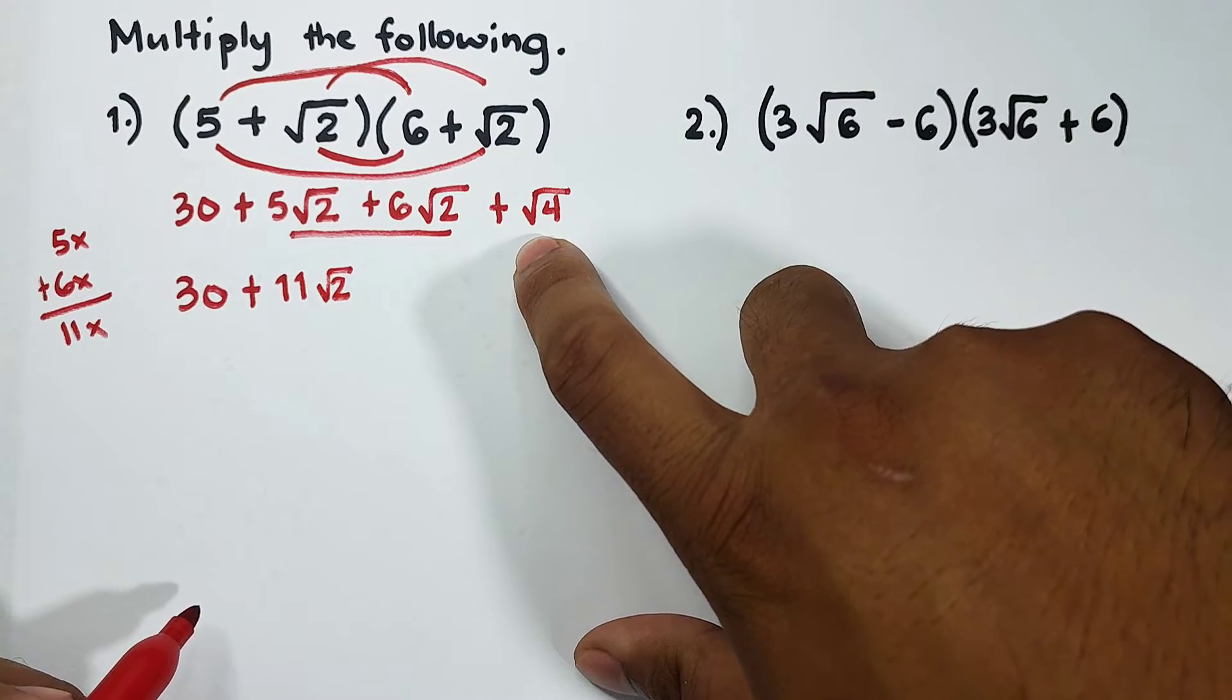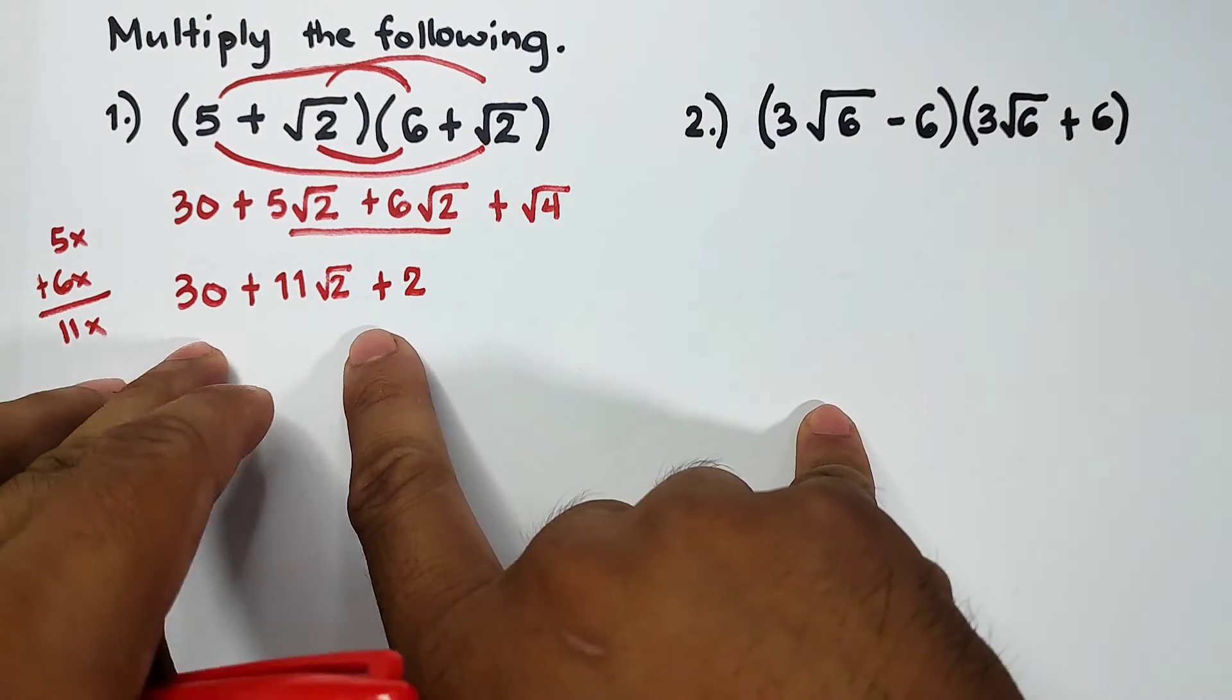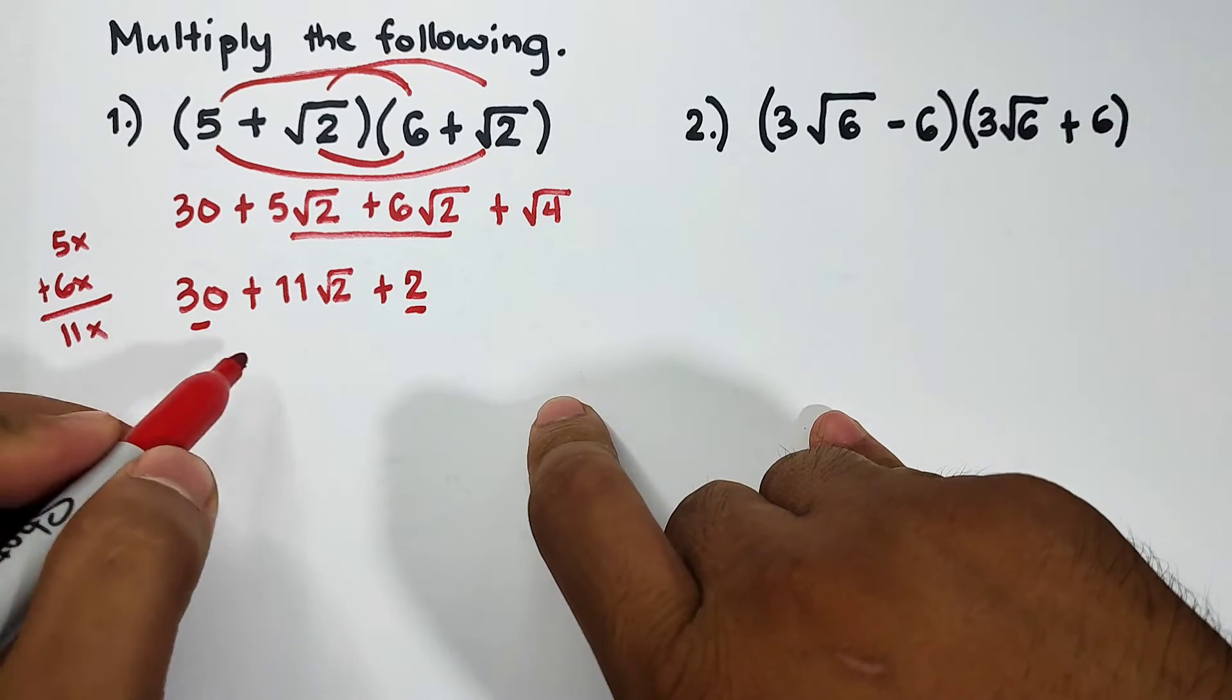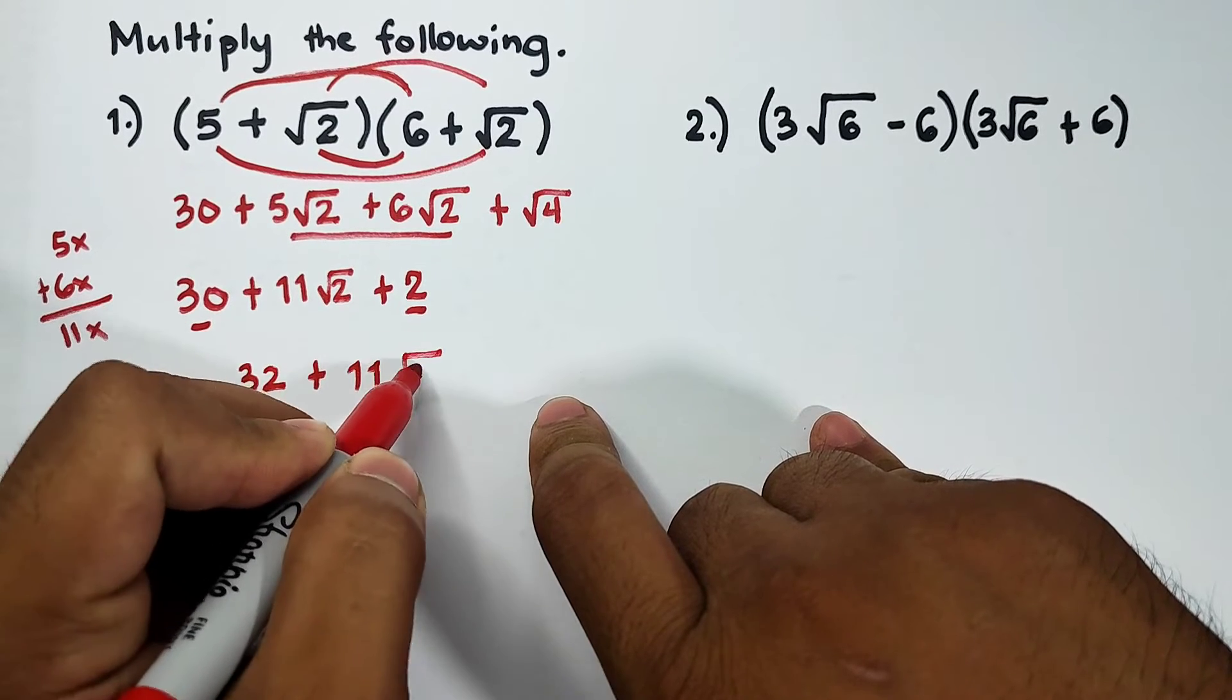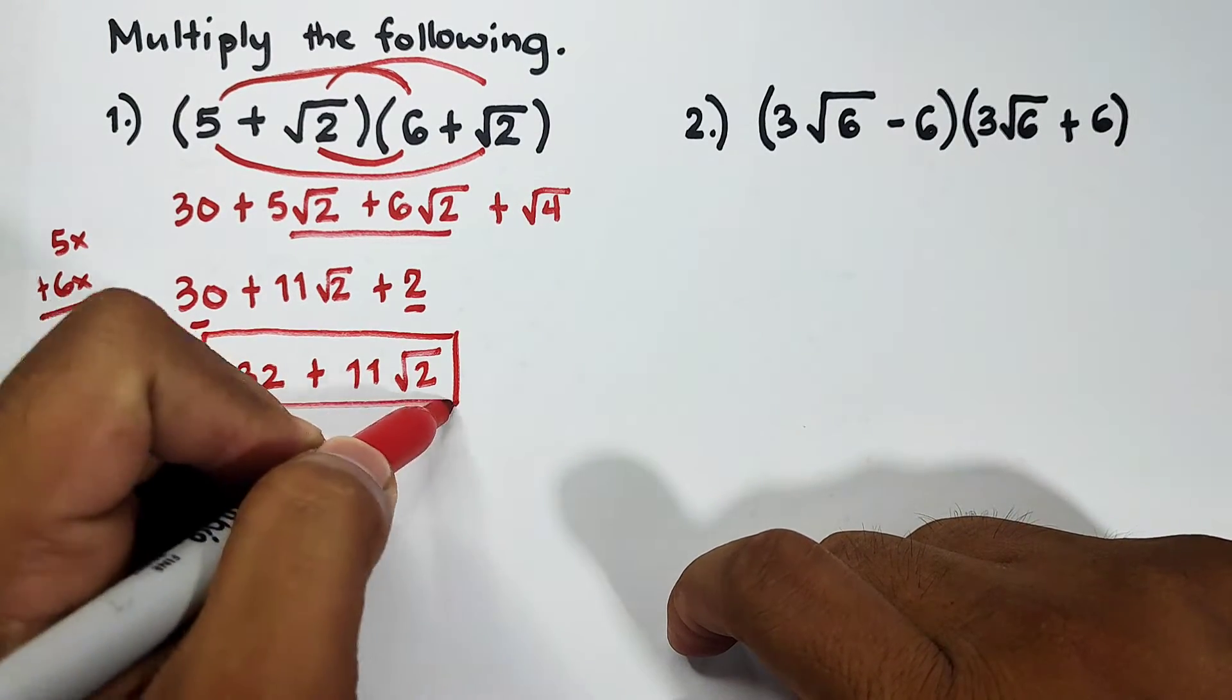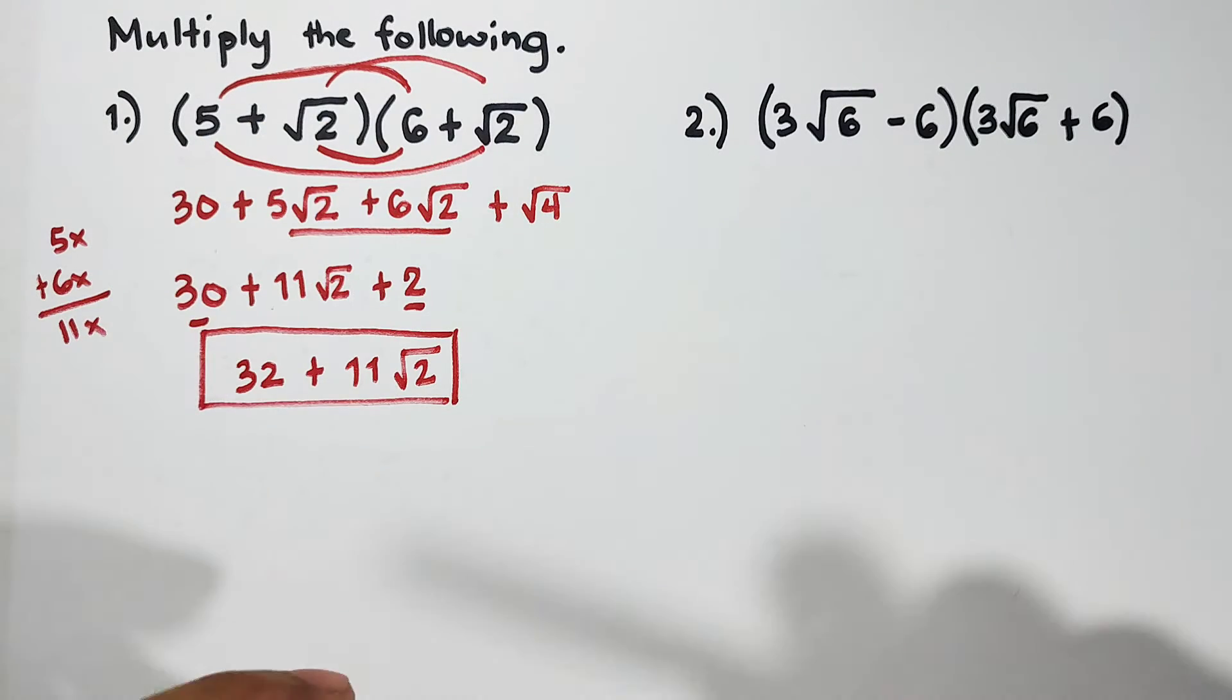The square root of 4 can be simplified as 2 because it's a perfect square. Given this expression, 30 plus 11 square root of 2 plus 2, we can add 30 and 2, which will give us 32 plus 11 square root of 2. So this is our final answer for item number one.